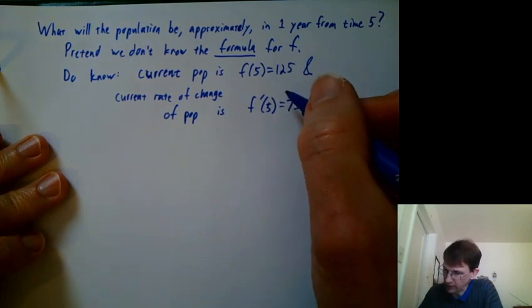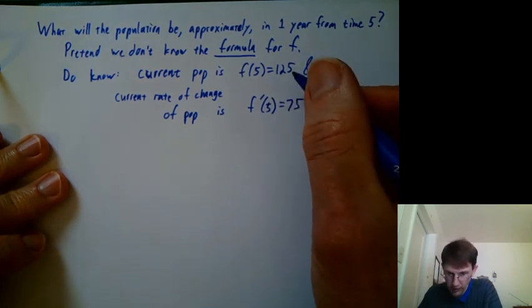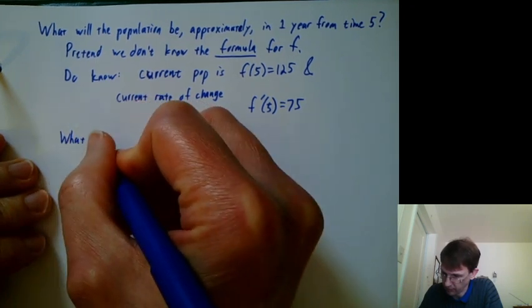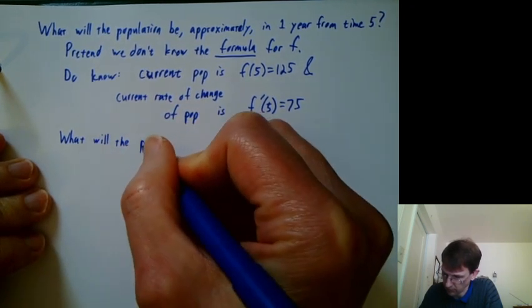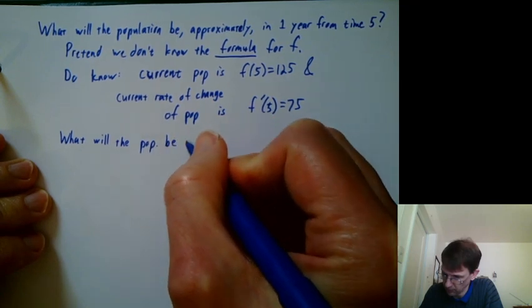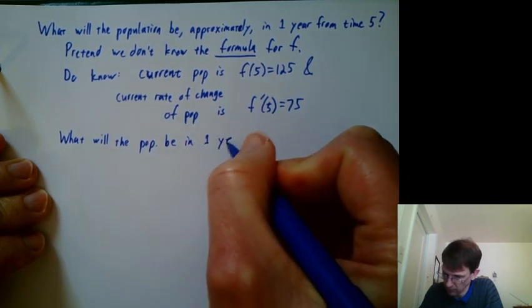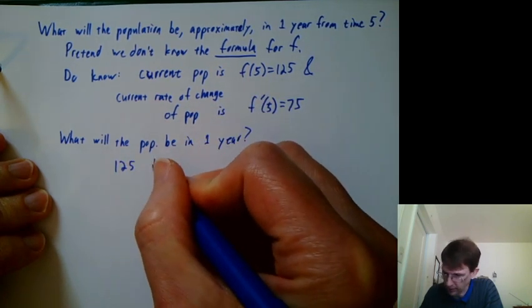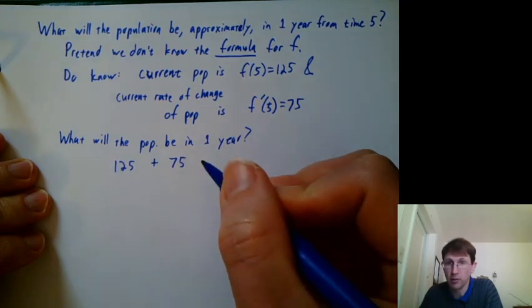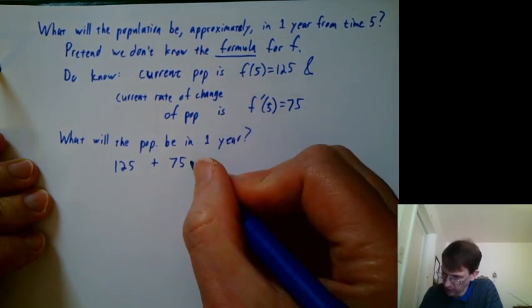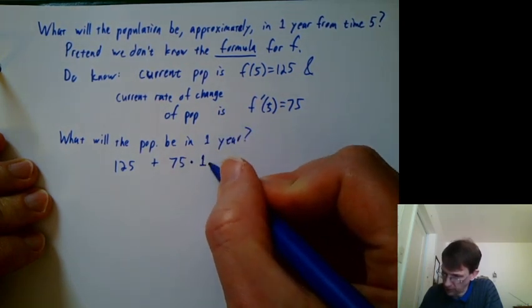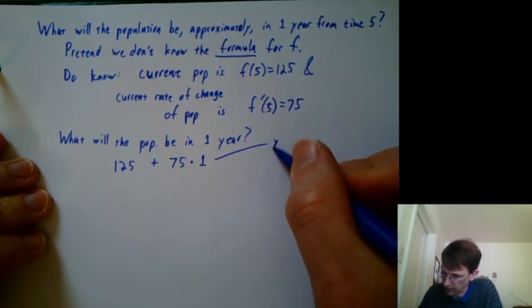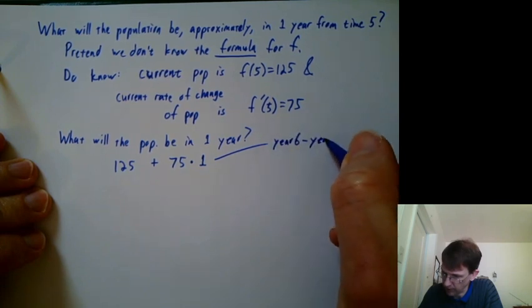Let's use these facts without knowing the formula for f now to say what will the population be in one year. Well, we have 125 people right now. We're growing at 75 people per year. And we're growing over a time span of one year. And that one, you could say is year 6 minus year 5.